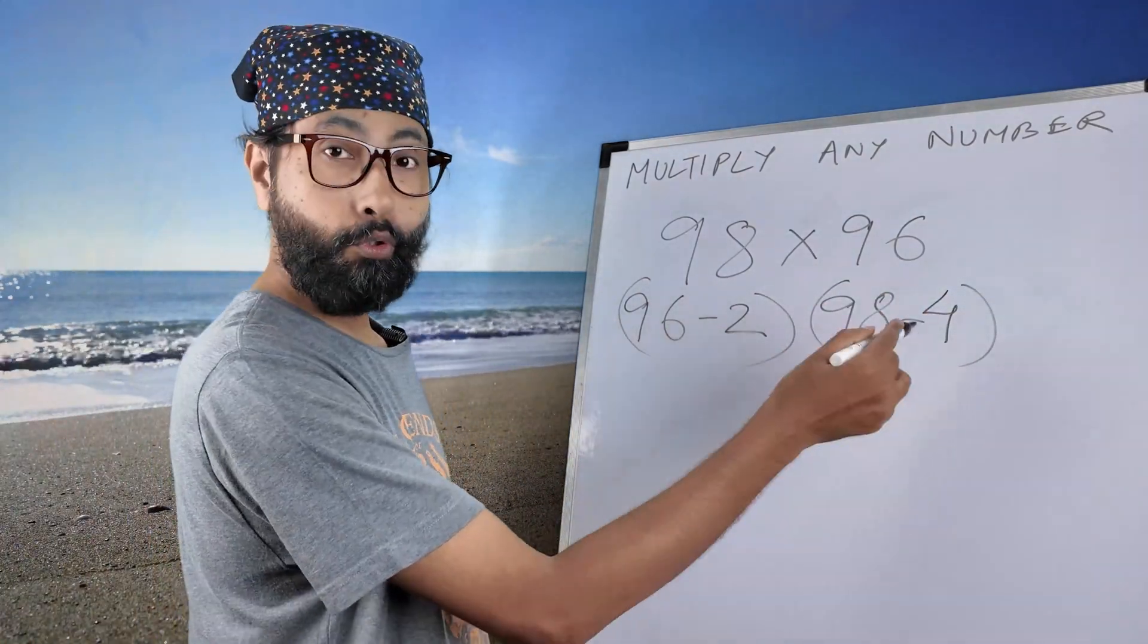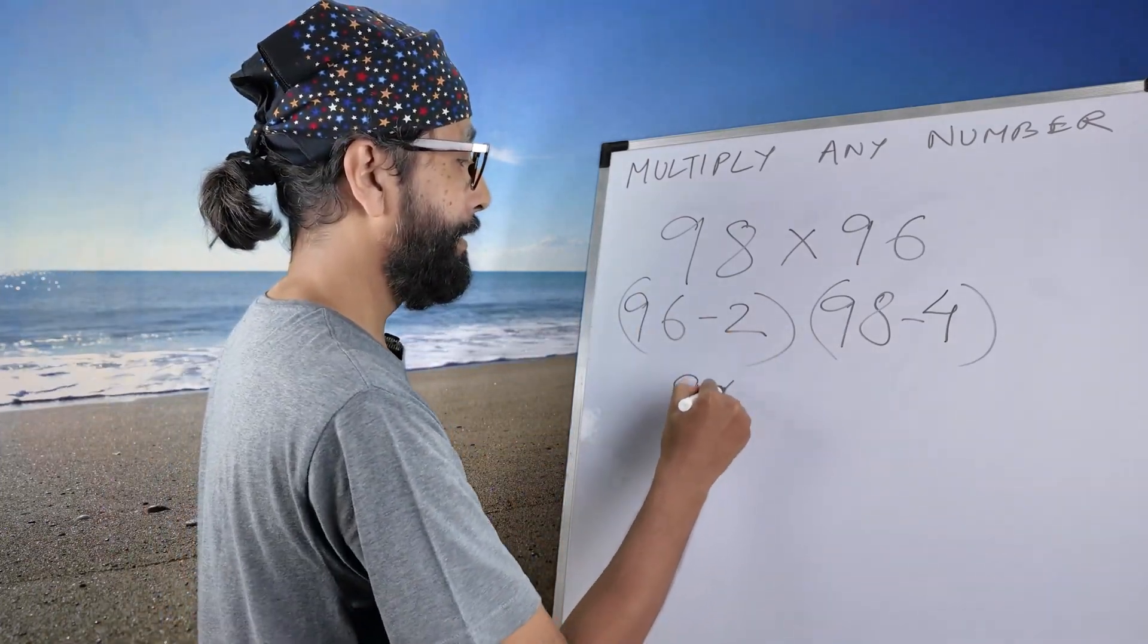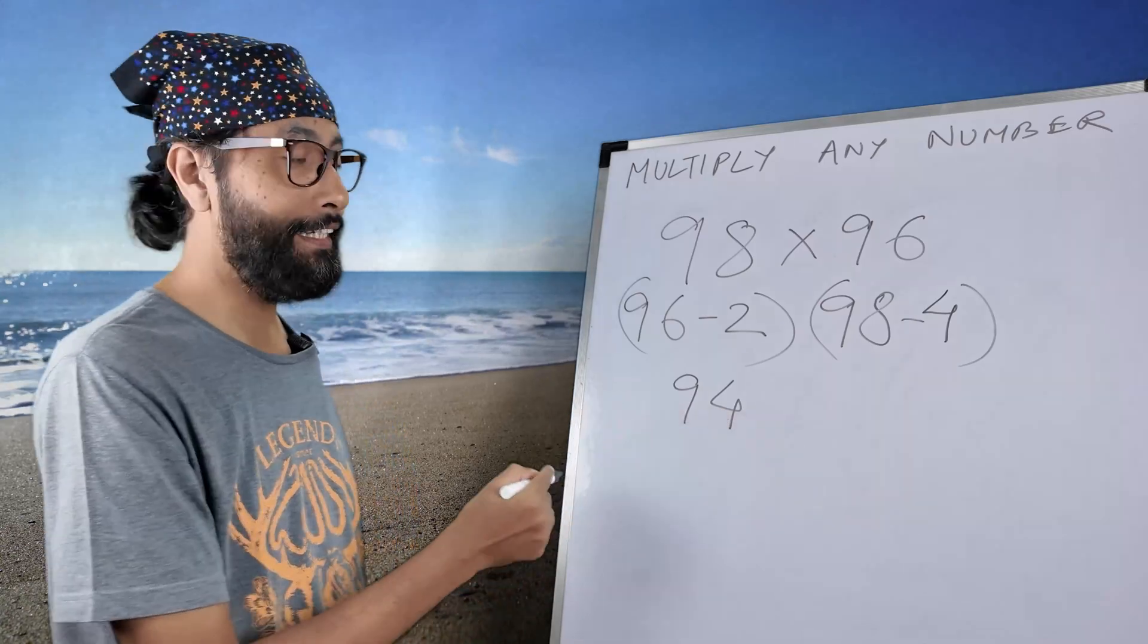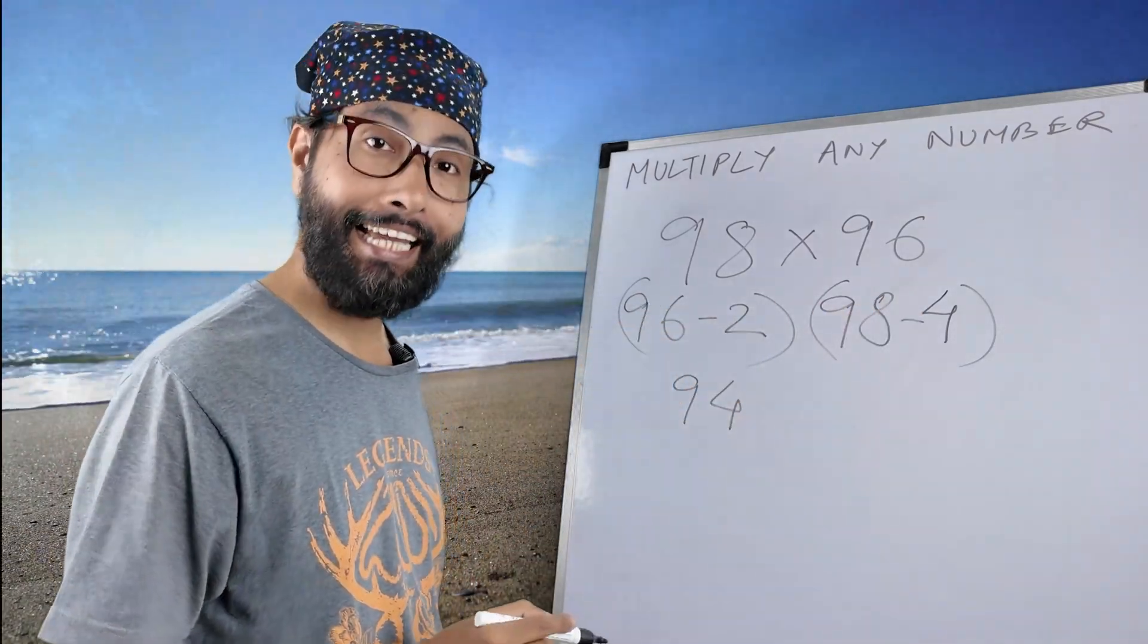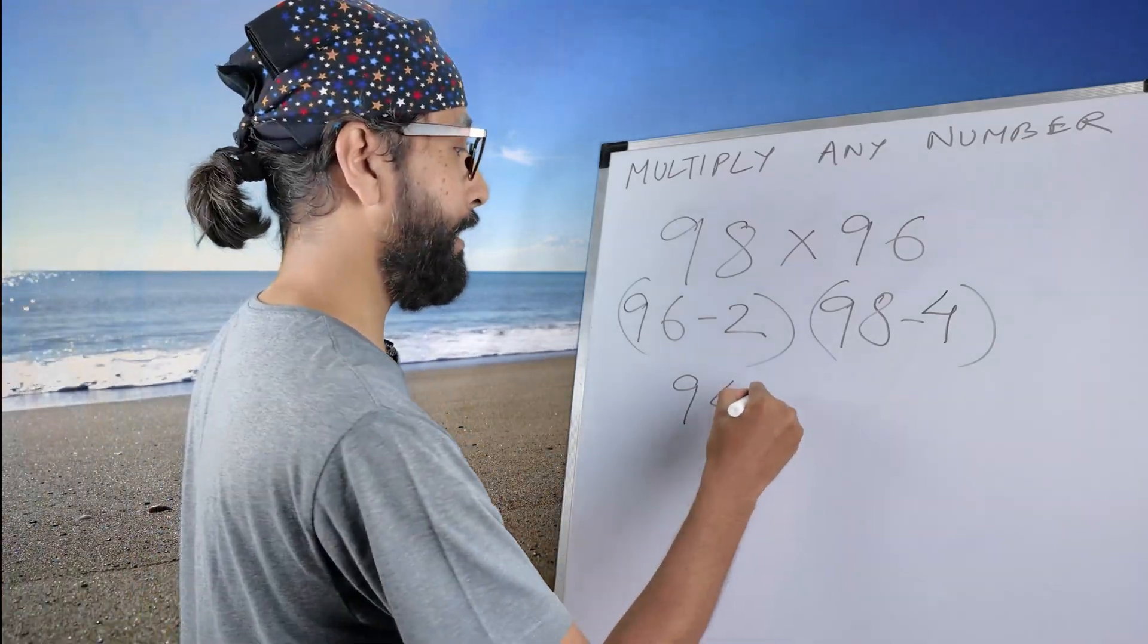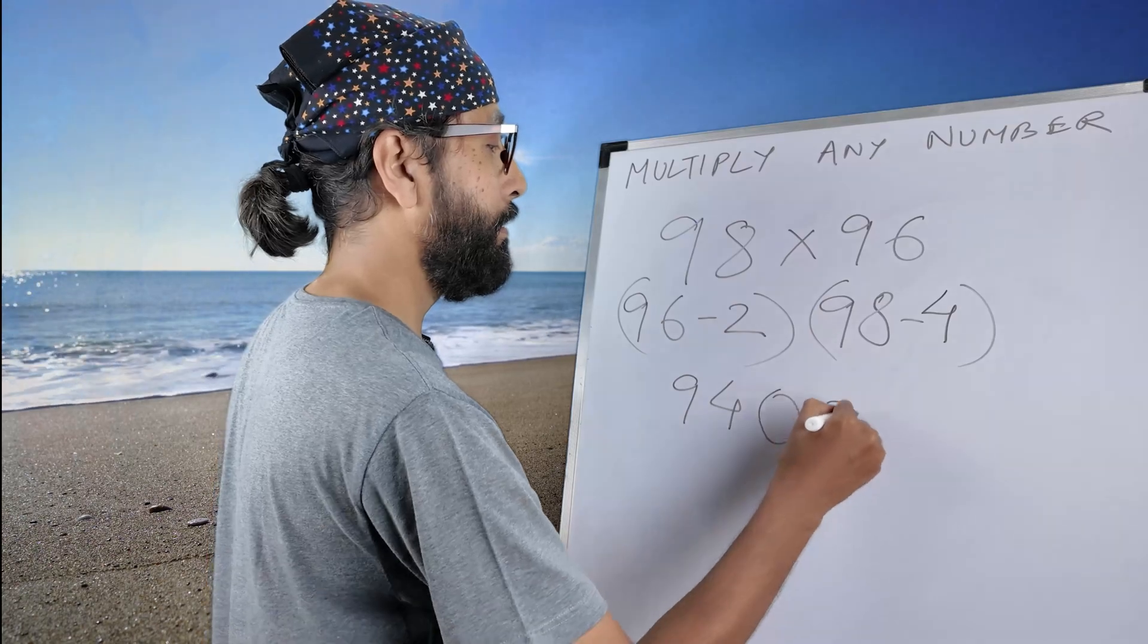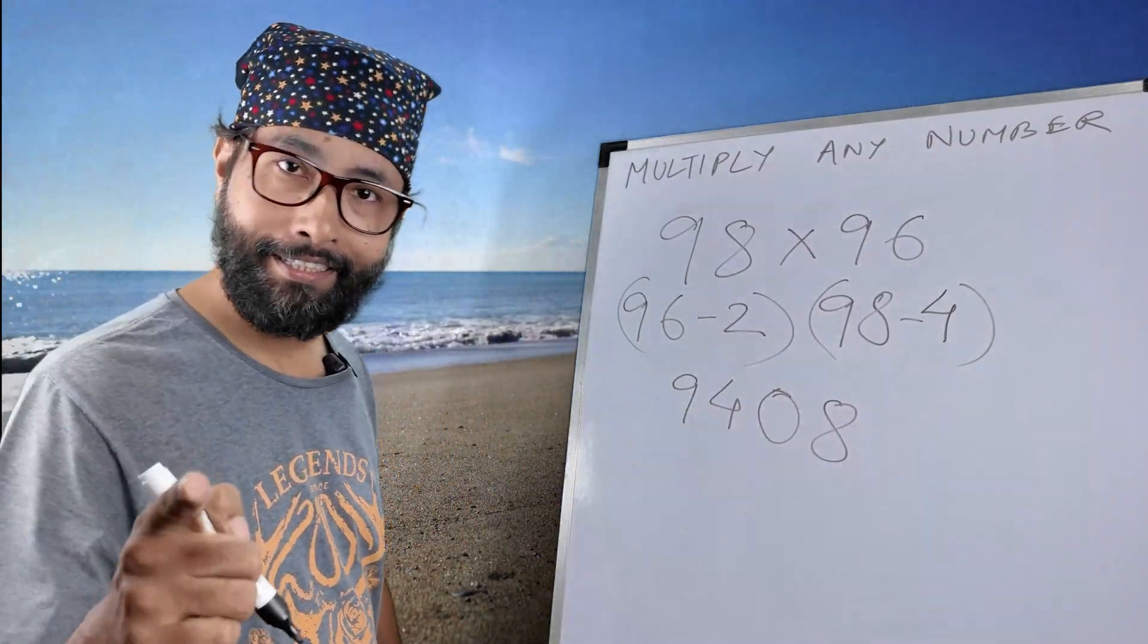Now see, both the numbers will be same, right? That is 94. This is your first number. And 4 multiplied by 2 is 8. Whenever you get a one digit number, add a zero before that. The final answer will be 9408. Simple.